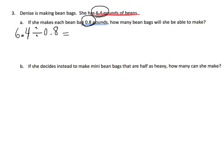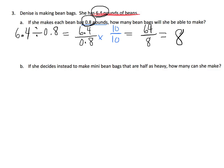We're going to rewrite it as a fraction: 6.4 over 0.8. We're going to multiply by 1, and my 1 is going to be 10 over 10. So we're not changing the value, just changing the way it looks. That means we get 64 over 8, and 64 divided by 8 — that's a division fact. 64 divided by 8 is 8. How many bean bags will she be able to make? 8 bean bags.